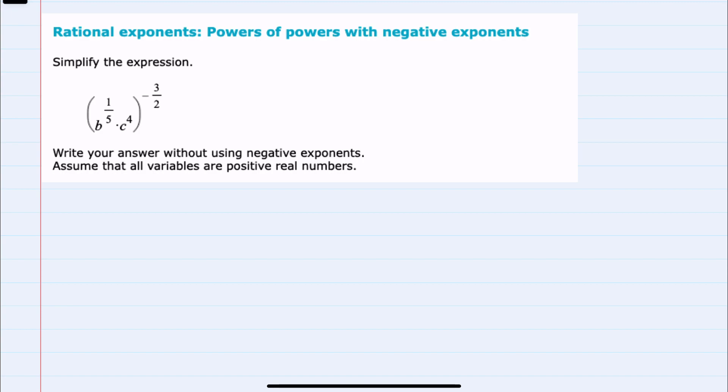We're asked to simplify this expression where we have powers inside these parentheses and a power outside the parentheses. And the rule for powers of powers is that we keep the base and we multiply the powers inside with the powers outside.